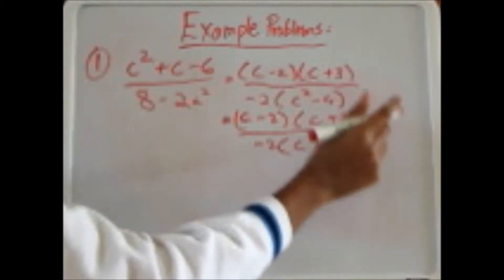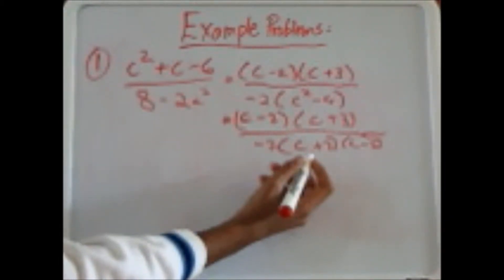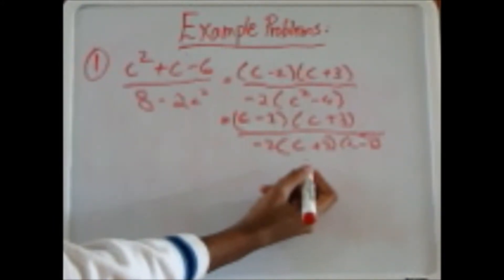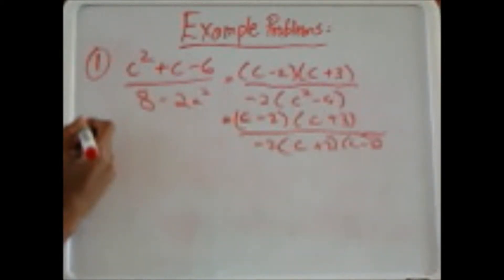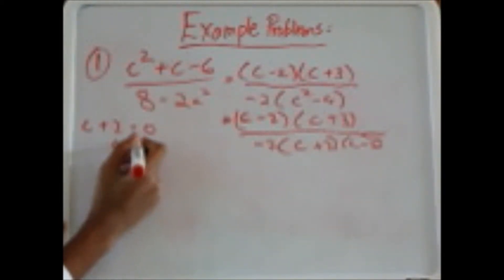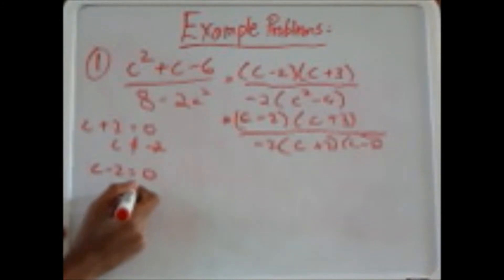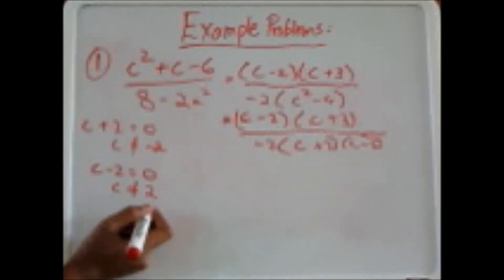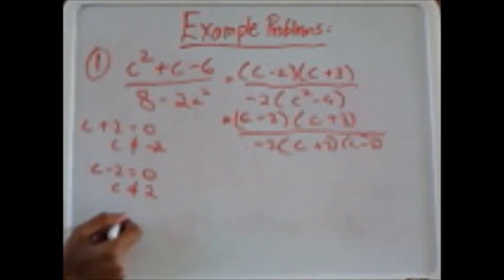Now our second step is to state all the restrictions. On the bottom there are two factors with variables, so we have two restrictions. If c plus 2 equals 0, then the restriction is that c cannot equal negative 2. And if c minus 2 equals 0, the restriction is that c cannot equal 2. So the restrictions are that c cannot equal negative 2 or 2.